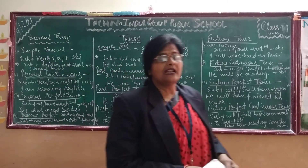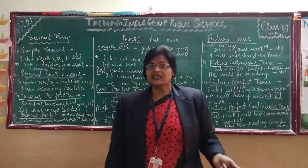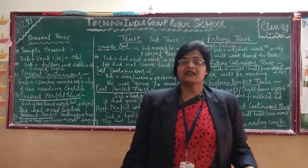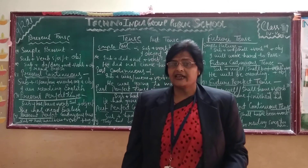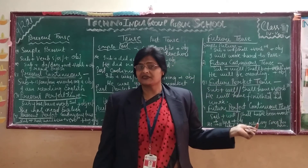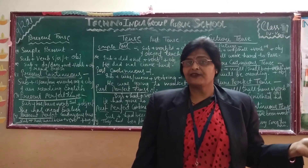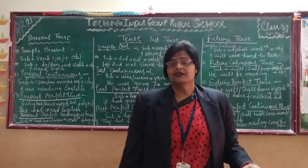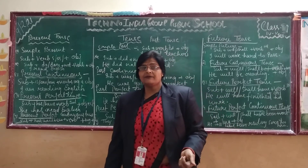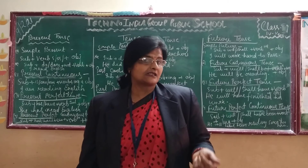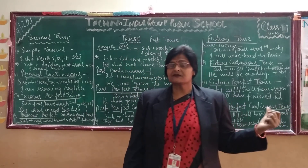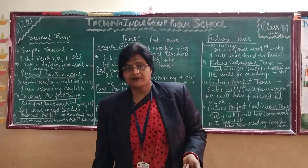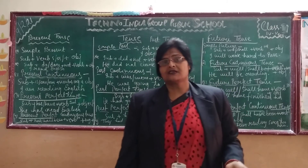In present perfect tense, we use have or has plus third form of the verb plus object. In past perfect tense, we use had plus third form. For example: I have completed my work. In future perfect tense: I will have completed my work. In perfect tense, we always use the third form of the verb. In present perfect continuous tense, we use subject plus has been or have been plus verb+ING.